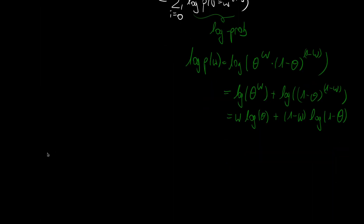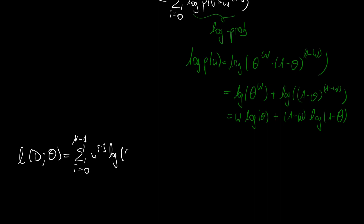So our log likelihood, small l of d semicolon theta, is the sum going from i equals zero to n minus one, where we plug in our observation. It is the sum over w_i times log of theta, plus one minus w_i times the logarithm of one minus theta. And now we have our log likelihood and we can define the optimization problem.